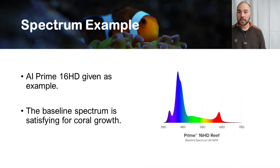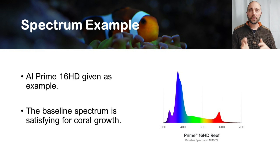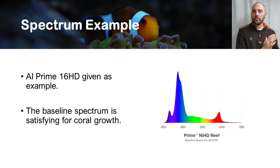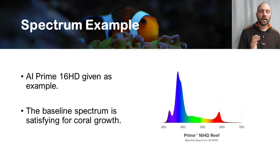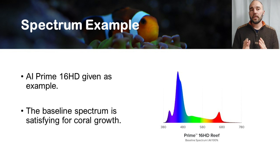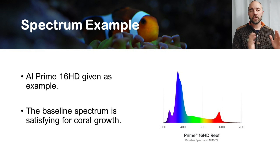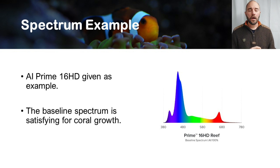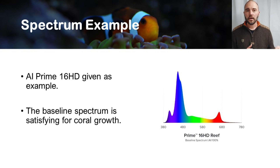I will give a practical example for a spectrum. I select the A8'16 HD spectrum as an example. Here we see it's a full spectrum light with an overweight in the blue. It has a red part, slightly bumped, and it also has a UV part. I think this is an excellent example, and in my experience the baseline spectrum — without rebalancing it — is very satisfying for coral growth.